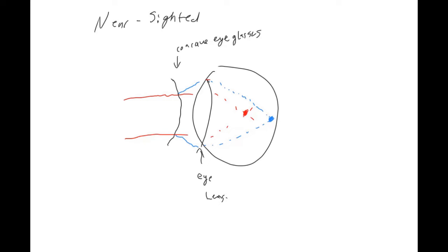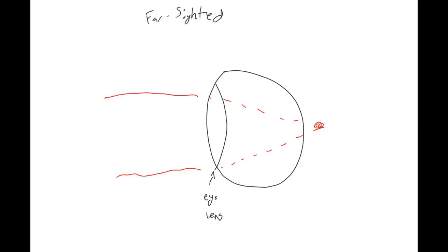You could probably guess how we're going to correct farsightedness. So again, you've got your eye that has its own lens. And for farsightedness, the lens is too weak, so it focuses back here behind your eye.